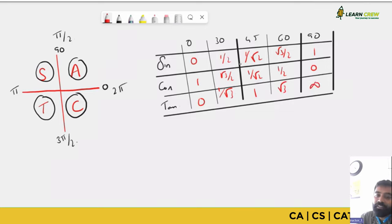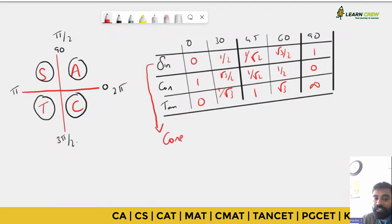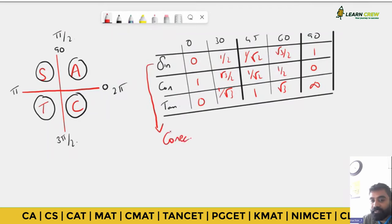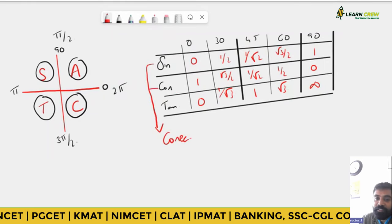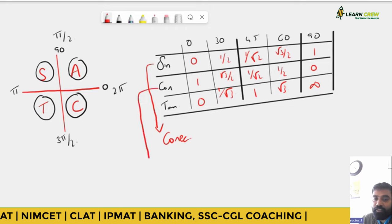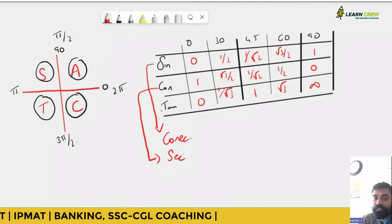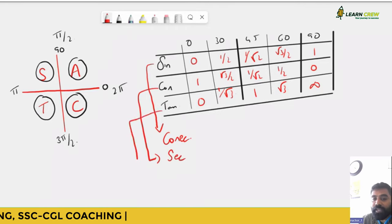The reciprocal functions: the reciprocal of sin is cosecant, the reciprocal of cos is secant, and the reciprocal of tan is cotangent. So 1/sin = cosecant, 1/cos = secant, 1/tan = cotangent.